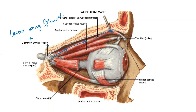The insertion of this muscle is in the form of an aponeurosis, dividing into three lamellae. Towards the insertion, this muscle ends by dividing into three lamellae. This muscle tends to lie above the superior oblique muscle, as seen here.